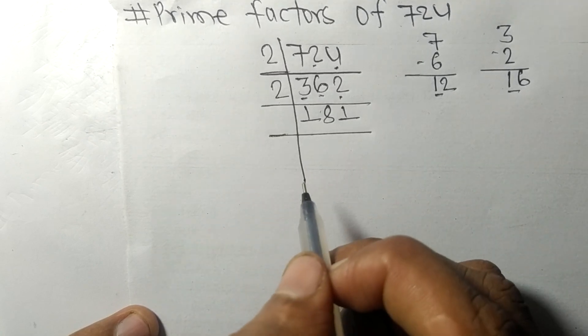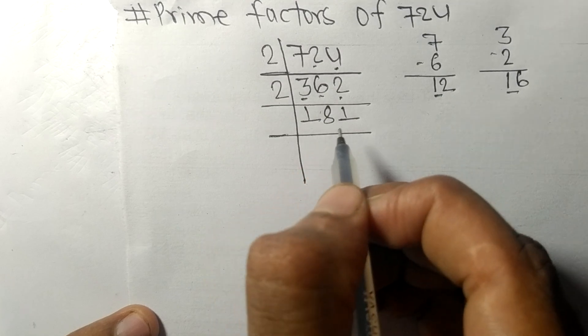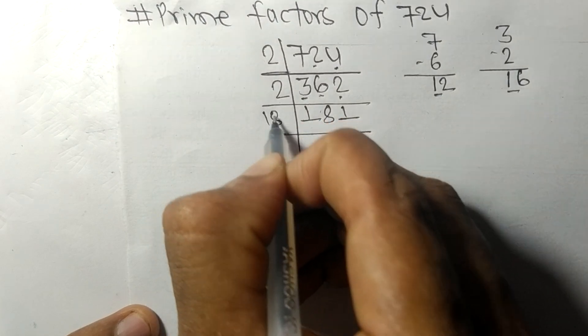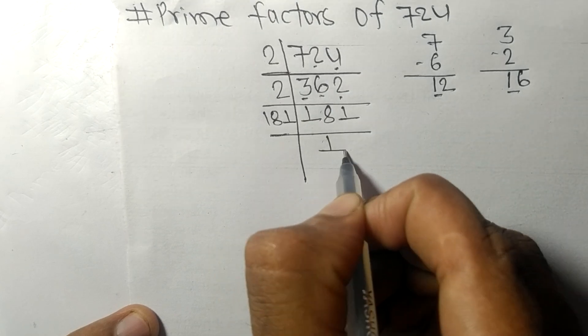So now we got 181, which is our prime number. So it is divisible by 181 only, and on dividing we get 1.